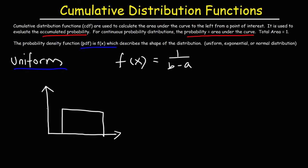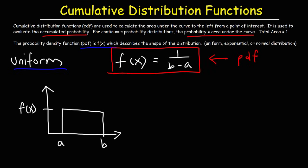You'll see something that looks like this. This is f(x), and it varies from a to b. This right here is the PDF — the probability density function for a uniform distribution. The CDF, the cumulative distribution function, will give us the area under the curve to the left. Let's say the point of interest is x. The CDF will give us the area to the left of x — the area of the shaded region in blue.